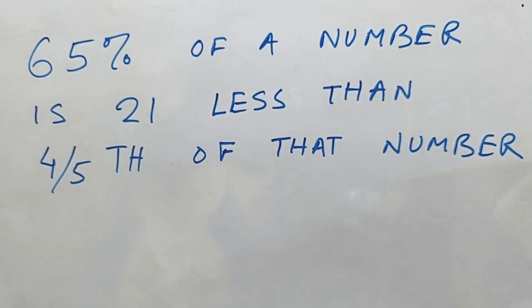Hi guys, this is Arindam. You're watching Brain Development. 65% of a number is 21 less than 4/5th of that number. Well, try to understand the language, because whenever you see a story problem, most of the cases the answer is hidden inside the question, so we just have to catch the key.